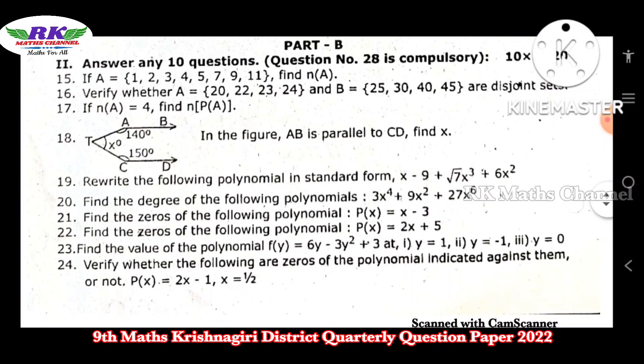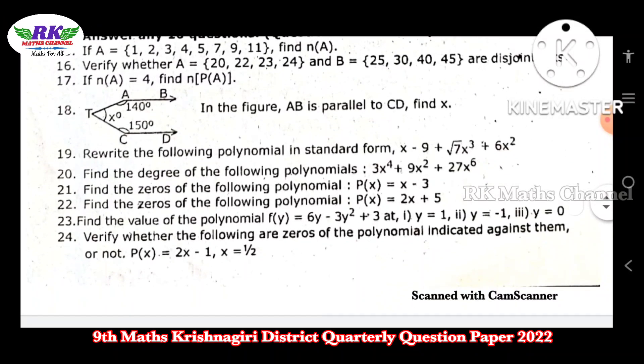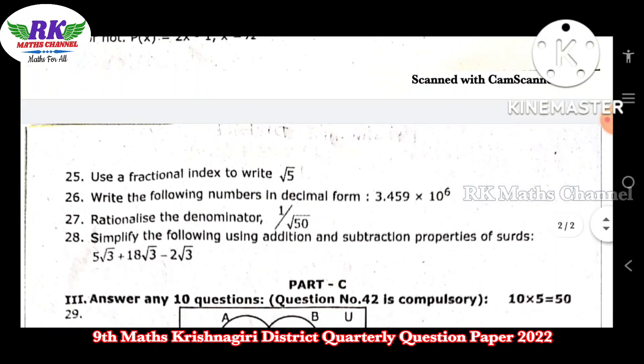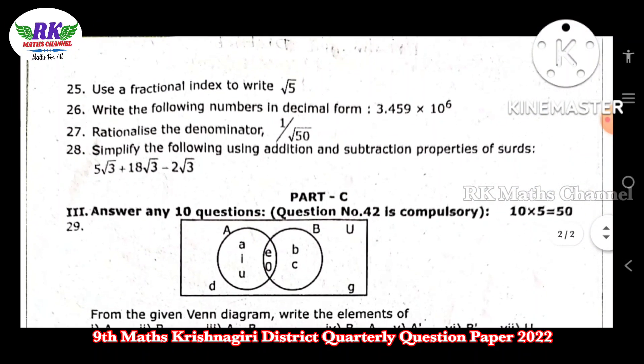Question number 15 onwards covers sets. You have to verify A intersection B equals the intersection of set A and set B. Questions 18, 19, 20, 21, 22, 23, 24 are also included. Question number 28 is the compulsory question.